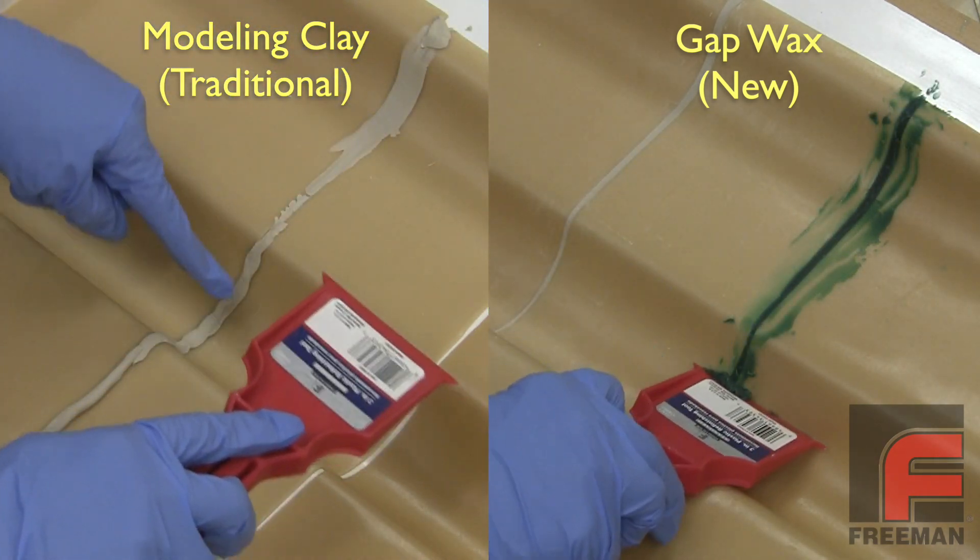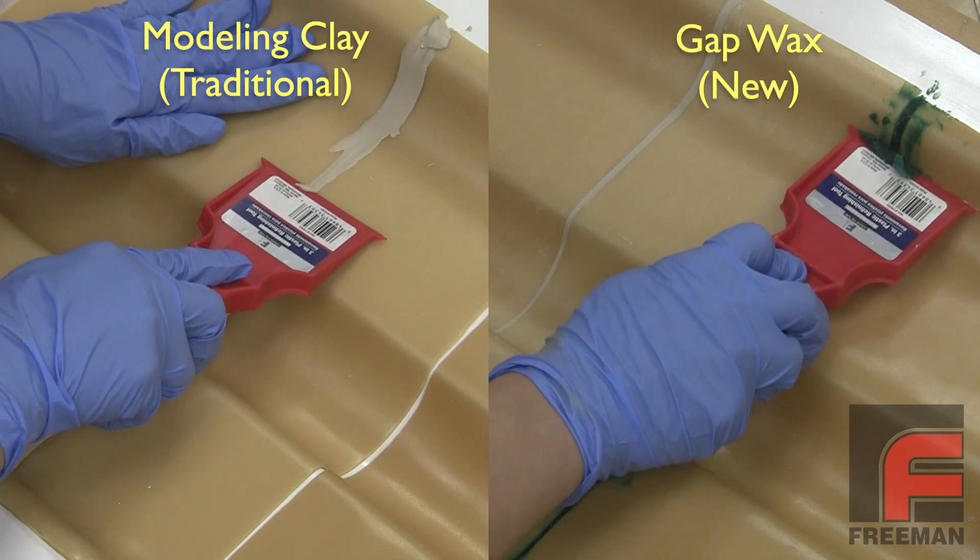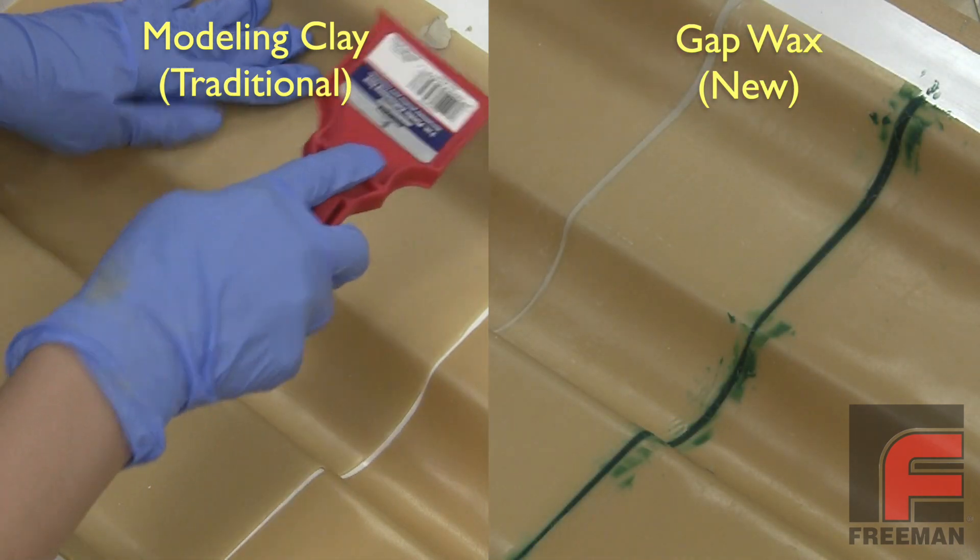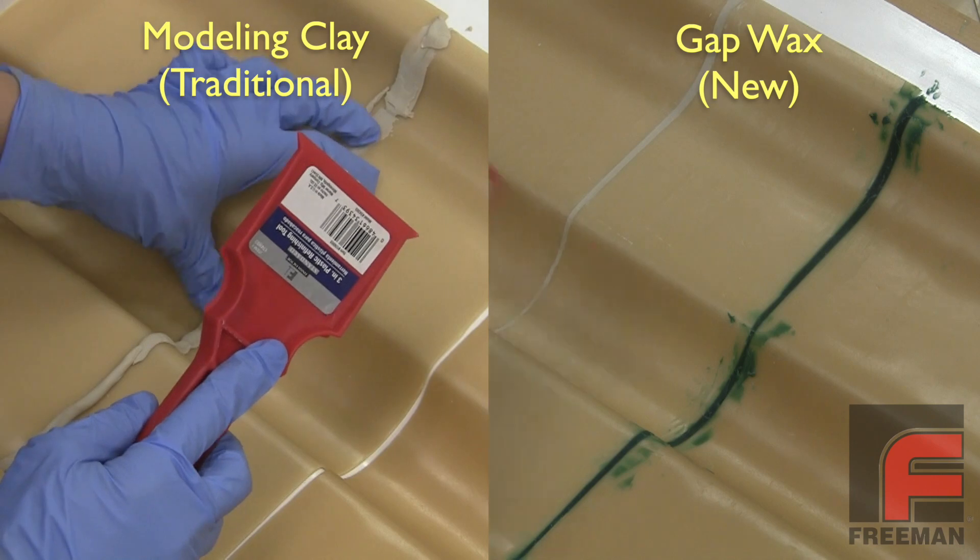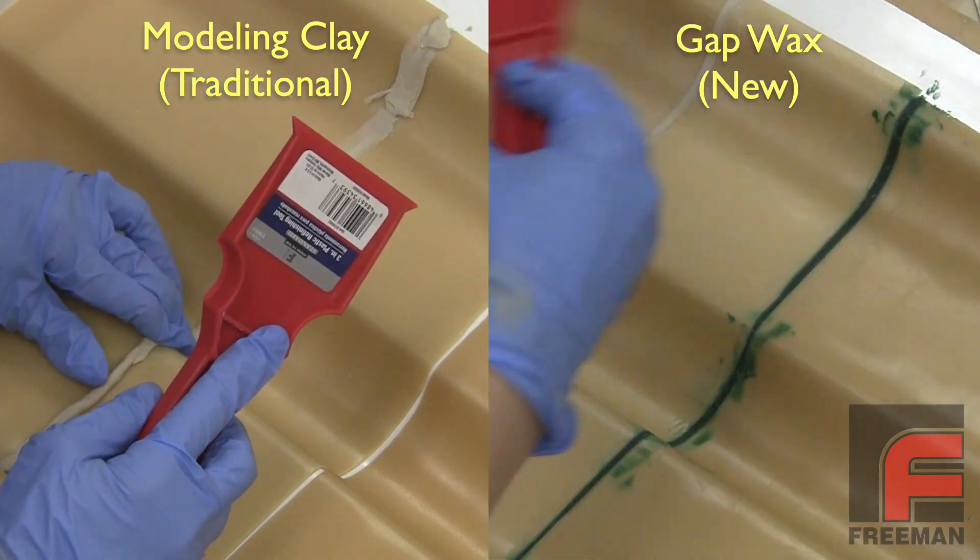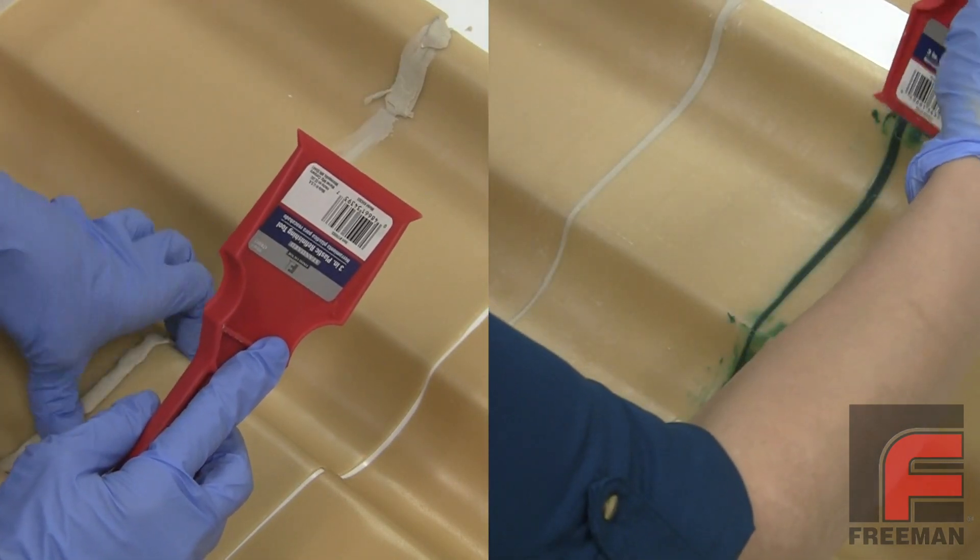Plus, our latest formulation is translucent to void any transfer of color onto a mold or part. Finally, gap wax also works well in creating a fillet on a composite tool. Now let's get back to our surface casting instructional demonstration.